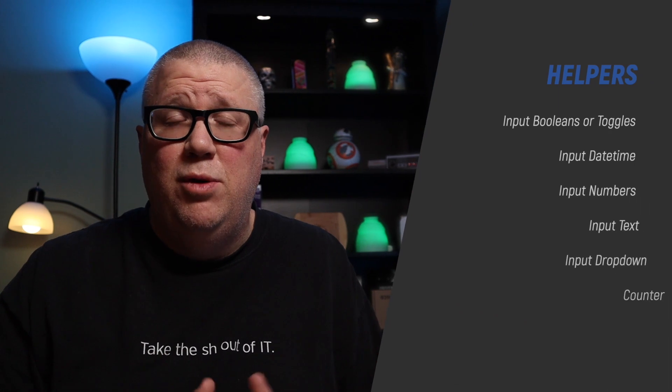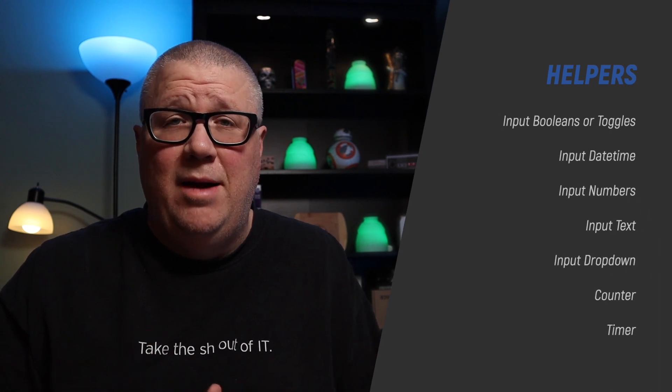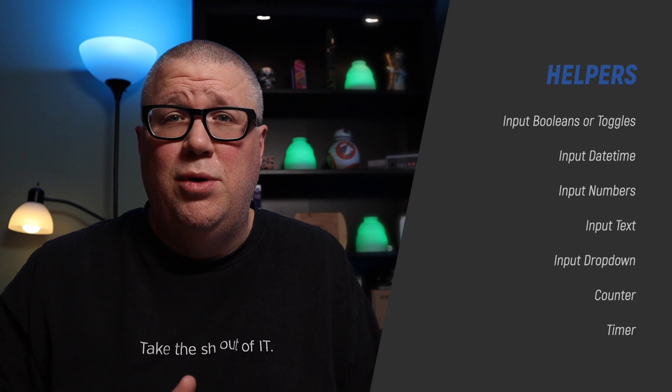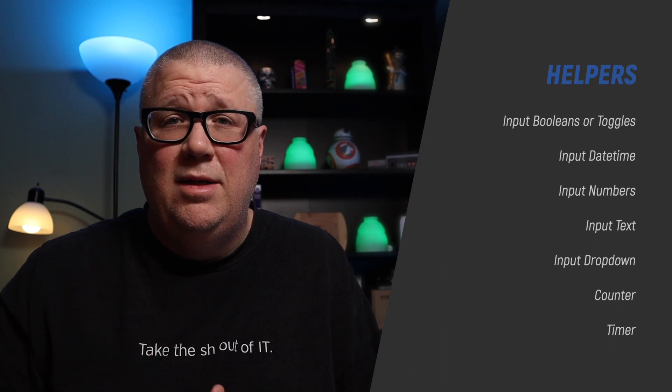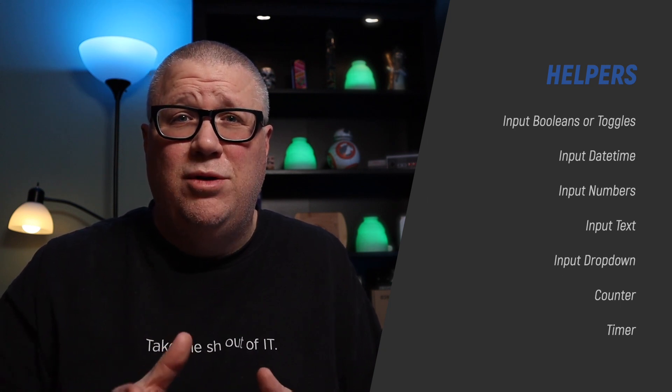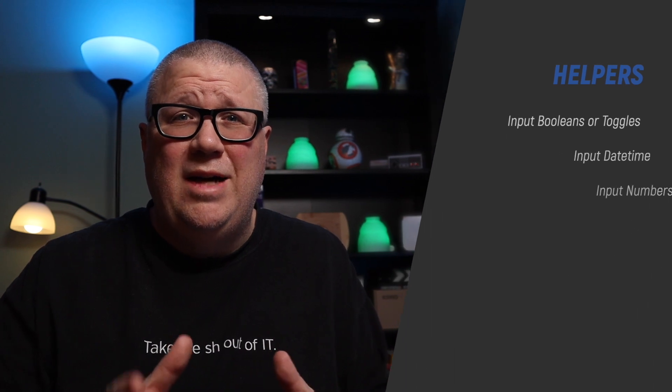If you're new to Home Assistant, or maybe you're just not aware, Home Assistant has seven built-in helpers to help improve building automations. In no particular order, they are toggles or input booleans, input datetimes, input numbers, input text, input drop-downs, and counters and timers.